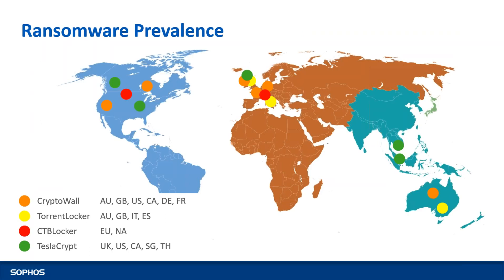Moving ahead about the prevalence of ransomware — looking at the graph, these are the reported numbers; many victims may pay the ransom but not publicize or report it. CryptoWall, TorrentLocker, CryptoLocker, and TeslaCrypt are the main ones, and the graph shows the countries where their prevalence is highest.